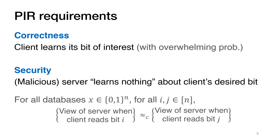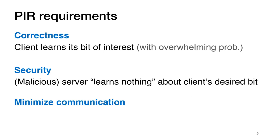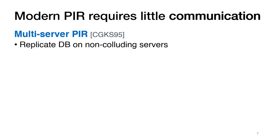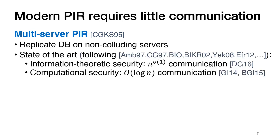There is a trivial protocol that meets both of these requirements: the client can simply download the entire database and perform its query locally. However, downloading the entire database is impractical in most settings, so we would want the protocol to be efficient, meaning that the total communication between the server and the client should be minimized. Indeed, these requirements can be met. The original PIR work also presented a protocol that achieves sublinear communication by replicating the database on two or more non-colluding servers.